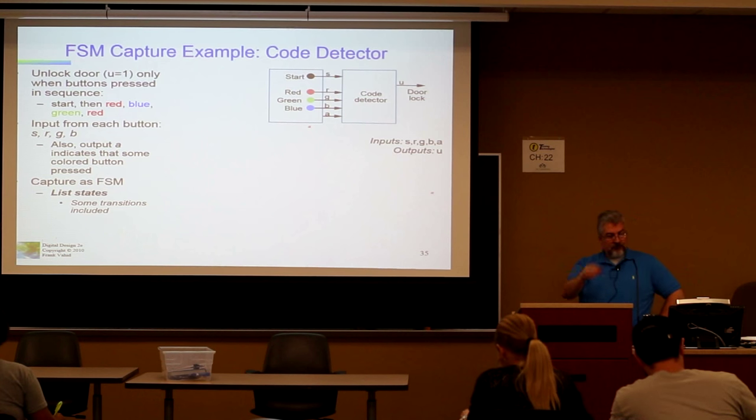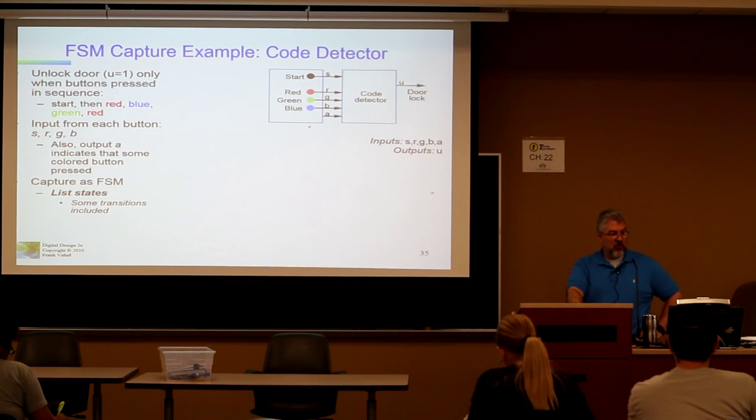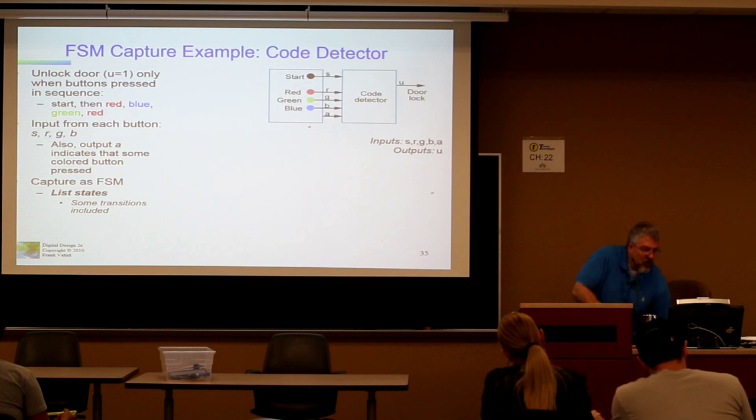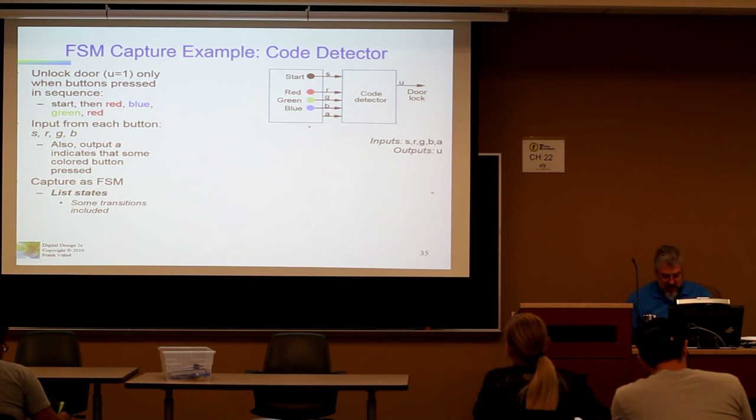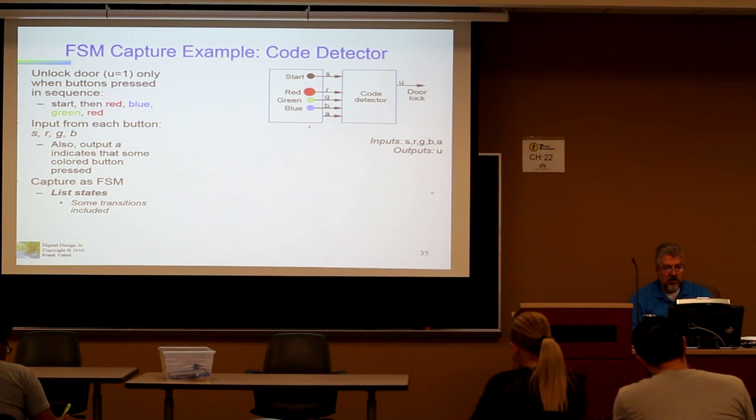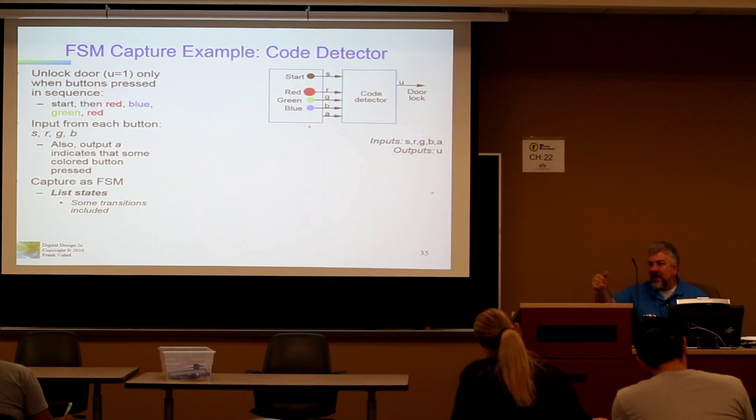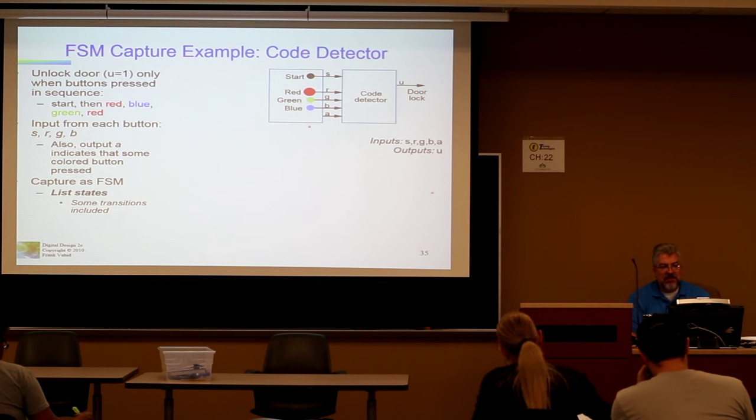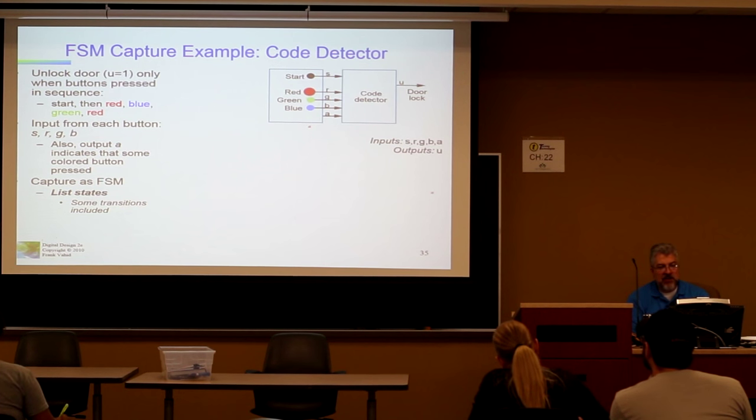So let's say, let's just do this example. Let's say we have a door and we want to unlock the door only when buttons are pressed in the correct sequence. So we have to press start, then red, blue, green, red. So this is going to be like one of those cipher locks that allows you to unlock something, right? We're going to do it with color so it's more inherently obvious. We're also going to add an output A that indicates that some colored button is pressed and that you actually want it to start.